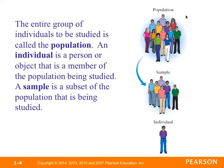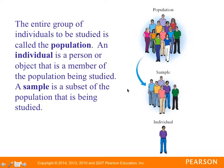The entire group of individuals to be studied is called the population. You can see there's a graphical depiction here. An individual is a person or an object that is a member of the population. A sample is a subset of the population that's being studied. We're going to talk about different types of sampling, but all of the people in the sample are also in the population.